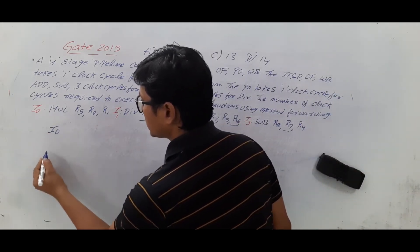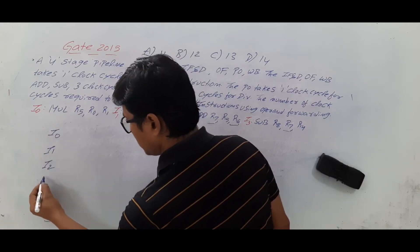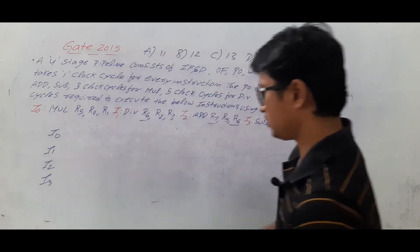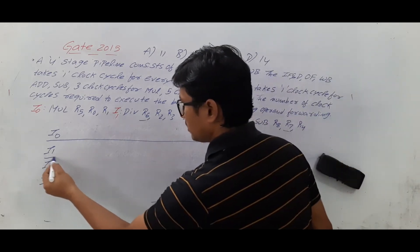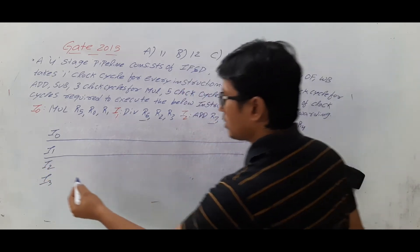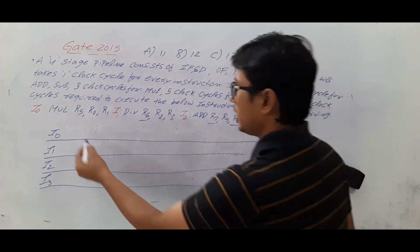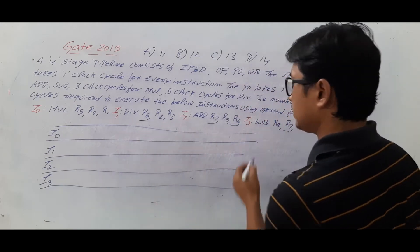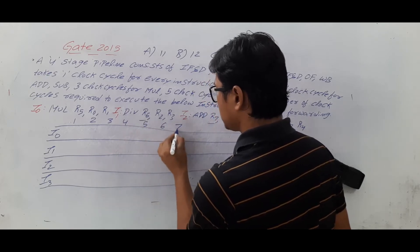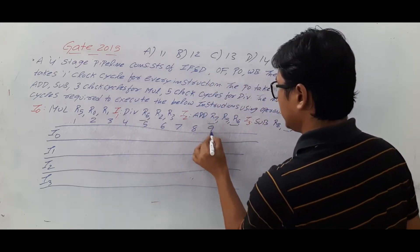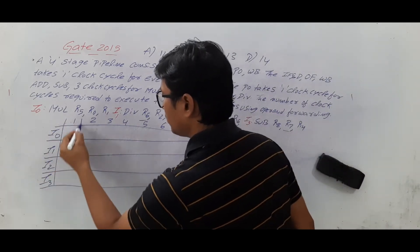Let me write the instructions I0, I1, I2, I3 and draw a table so you will understand the concept better. We have clock cycles 1 through 10 to begin with — let me first finish up to clock cycle 10 and then continue.